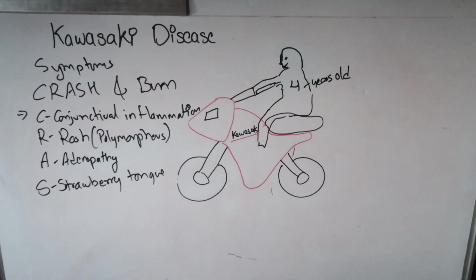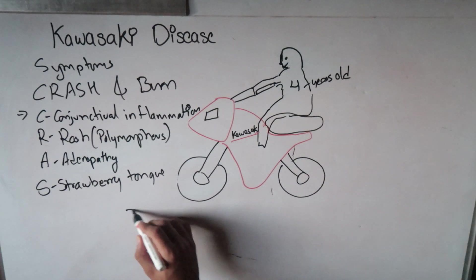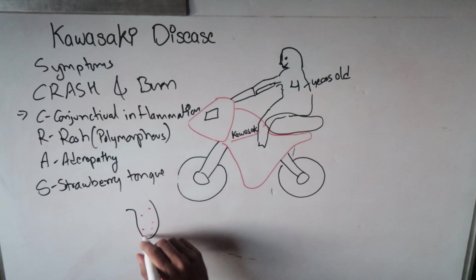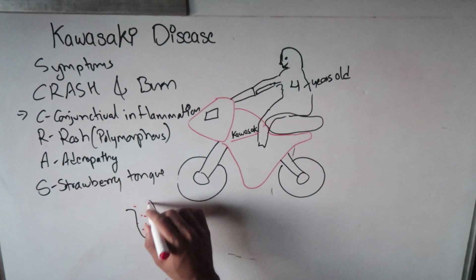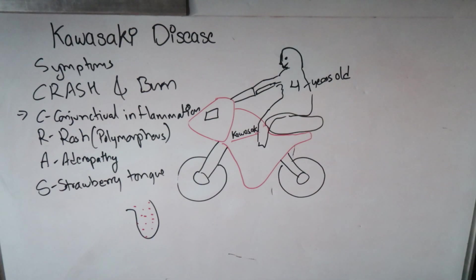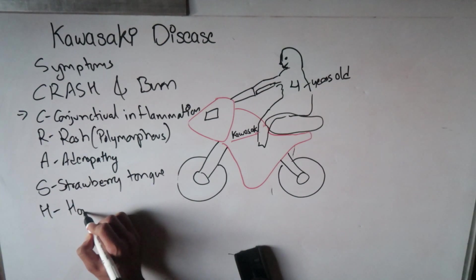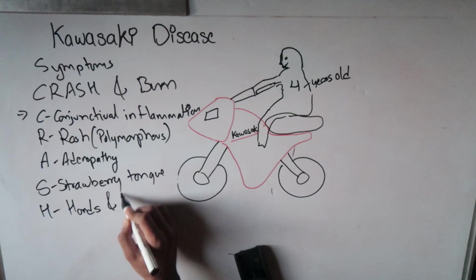There will be swelling of the lymph nodes, typically cervical lymph nodes. S means strawberry tongue. Strawberry tongue means the tongue will appear red just like a strawberry. This is due to sloughing off of the top layer of the tongue, giving the tongue a strawberry-like appearance.